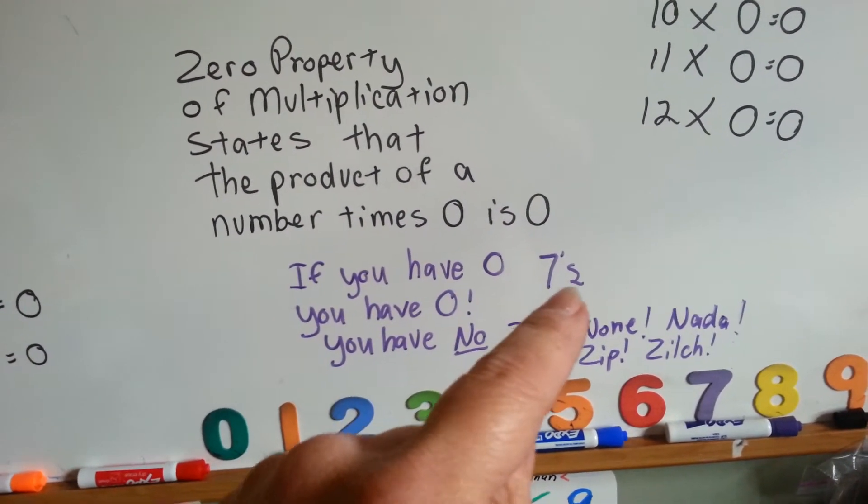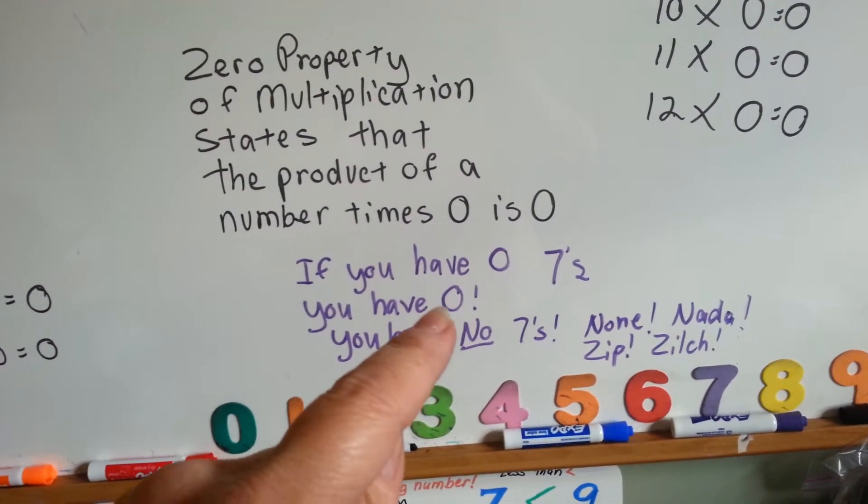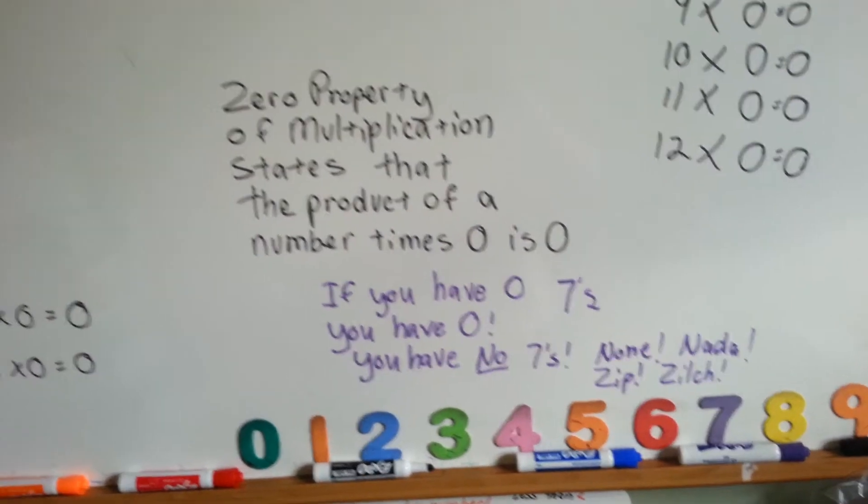If you have 0 7's, you don't have any 7's. You have 0. You have no 7's. None. Not a zip. Zilch. Nothing.